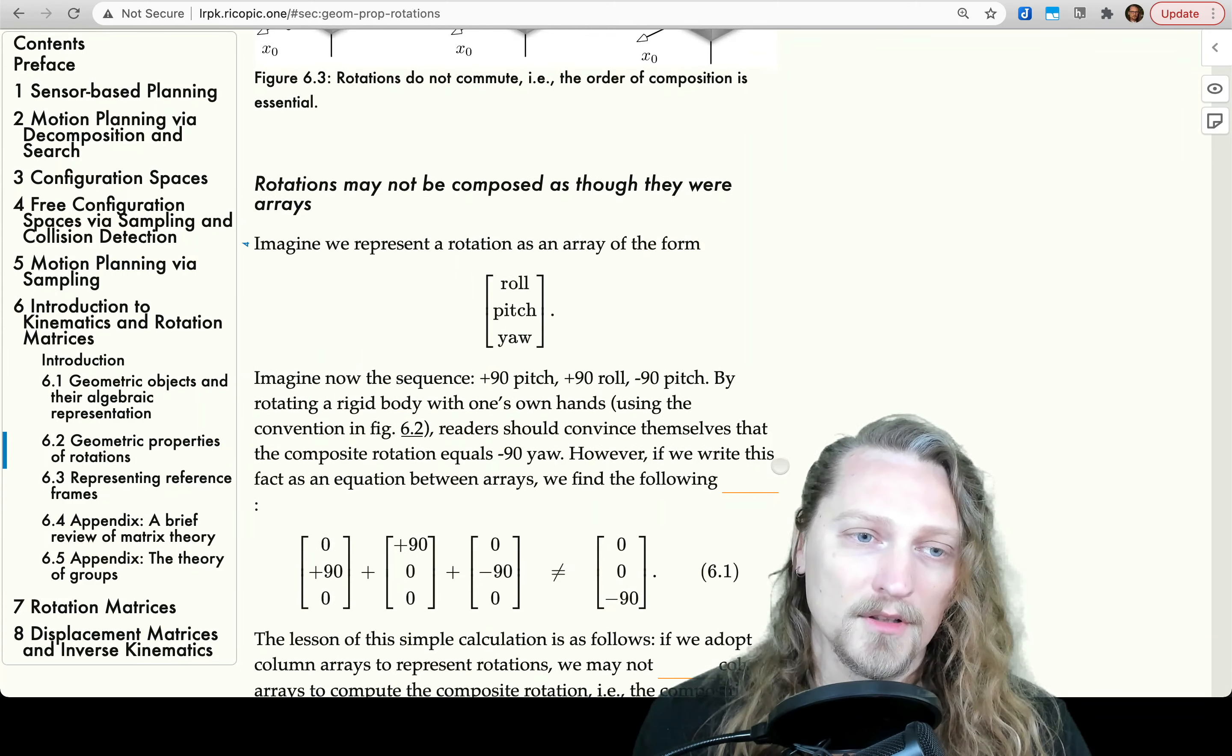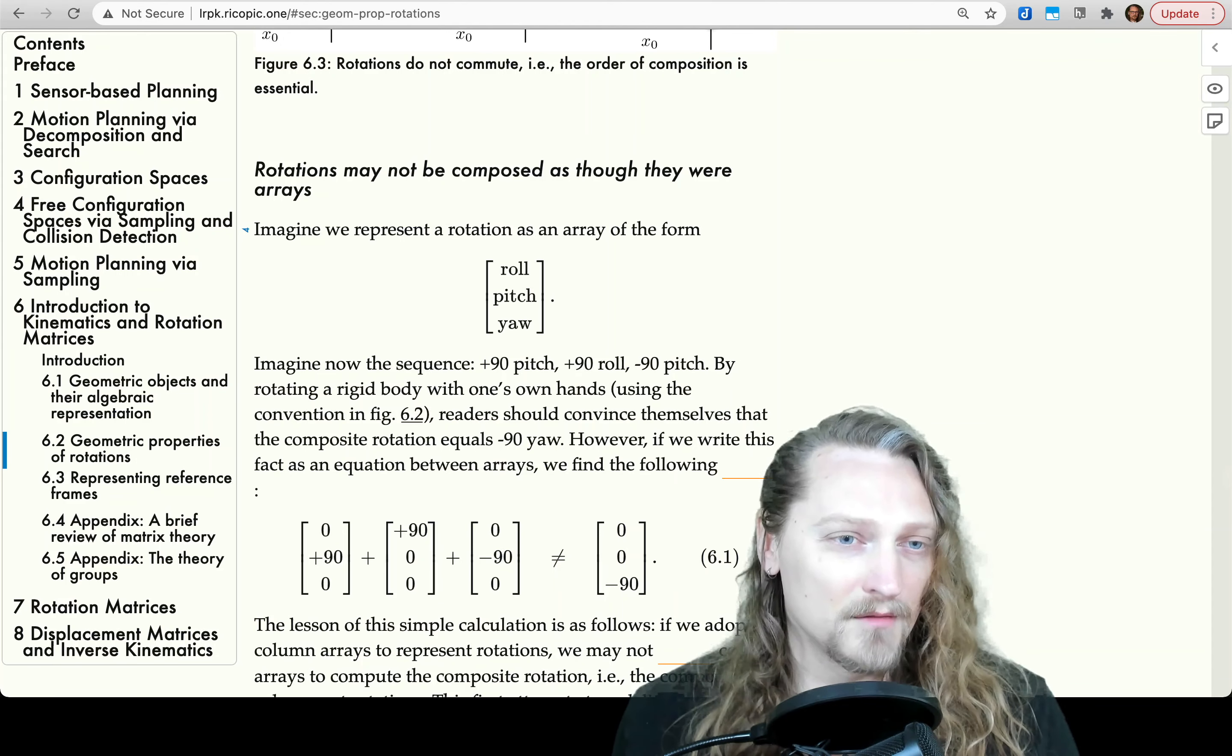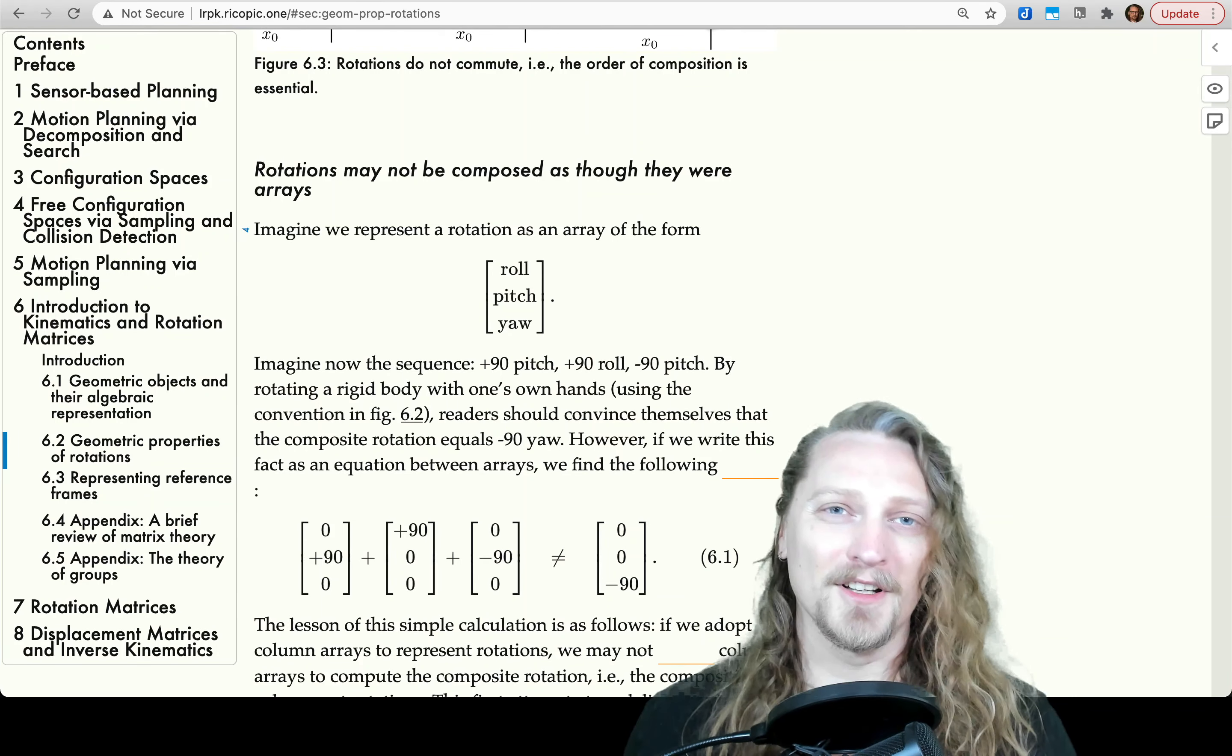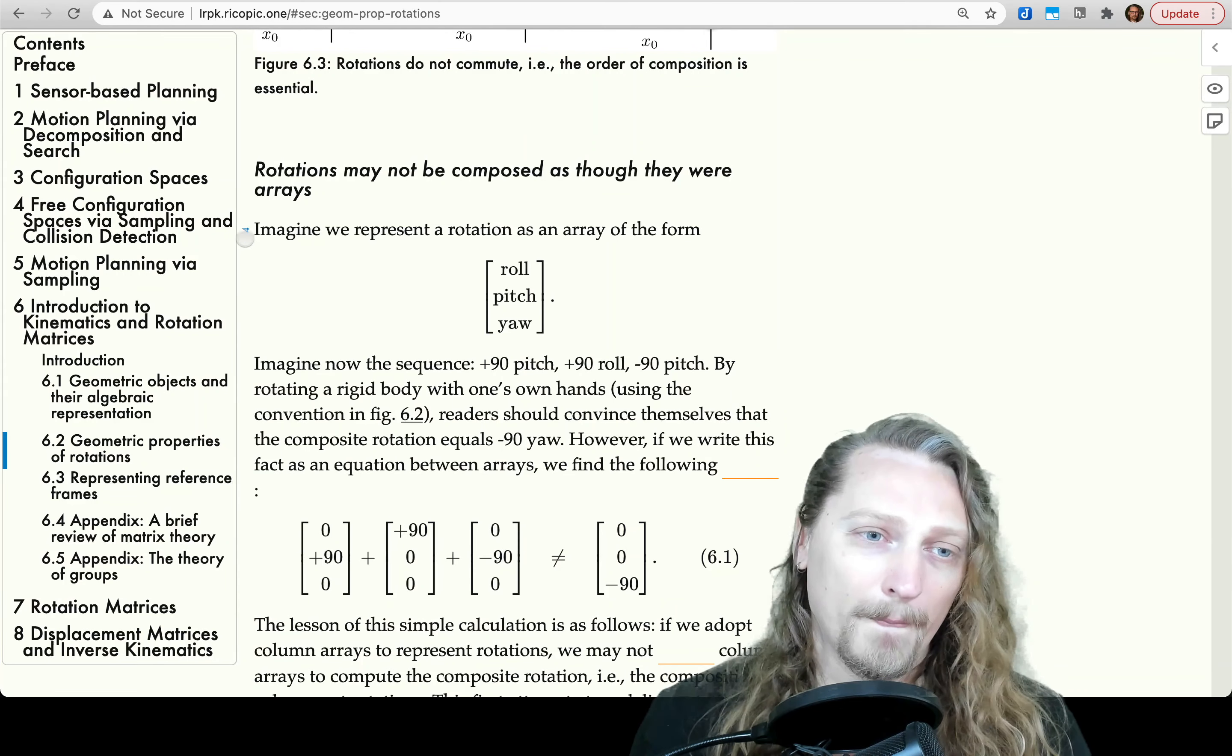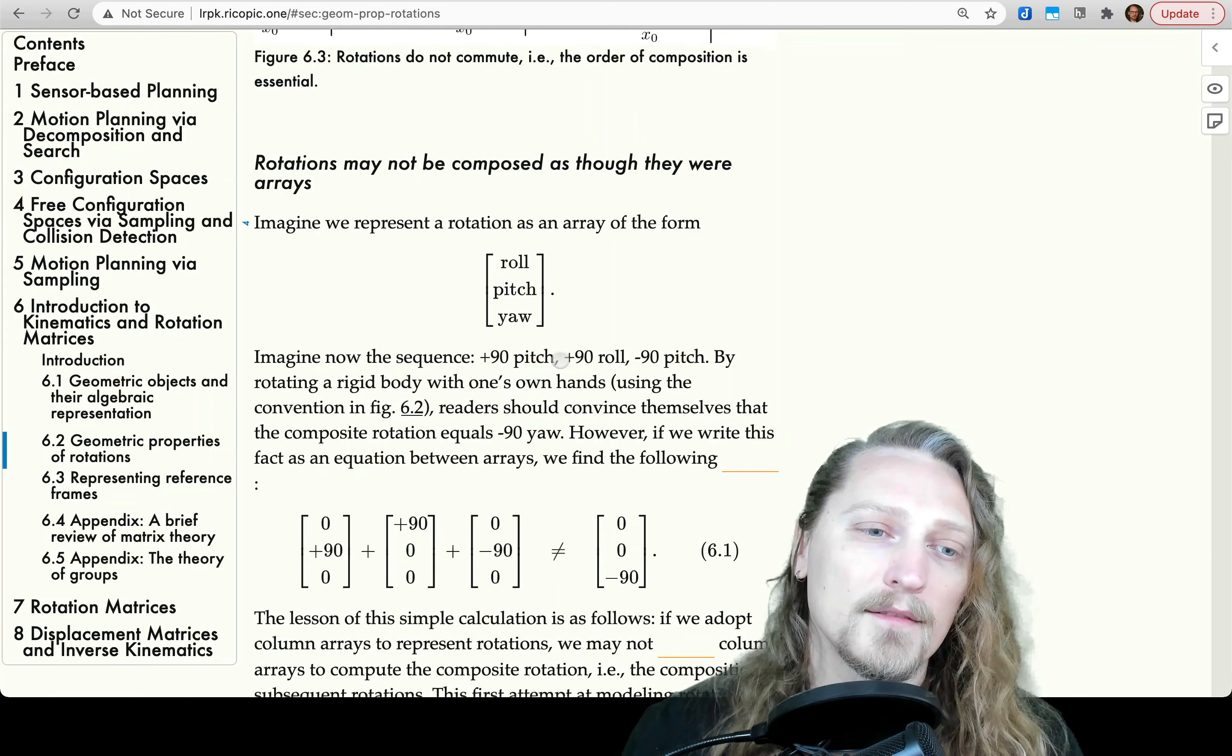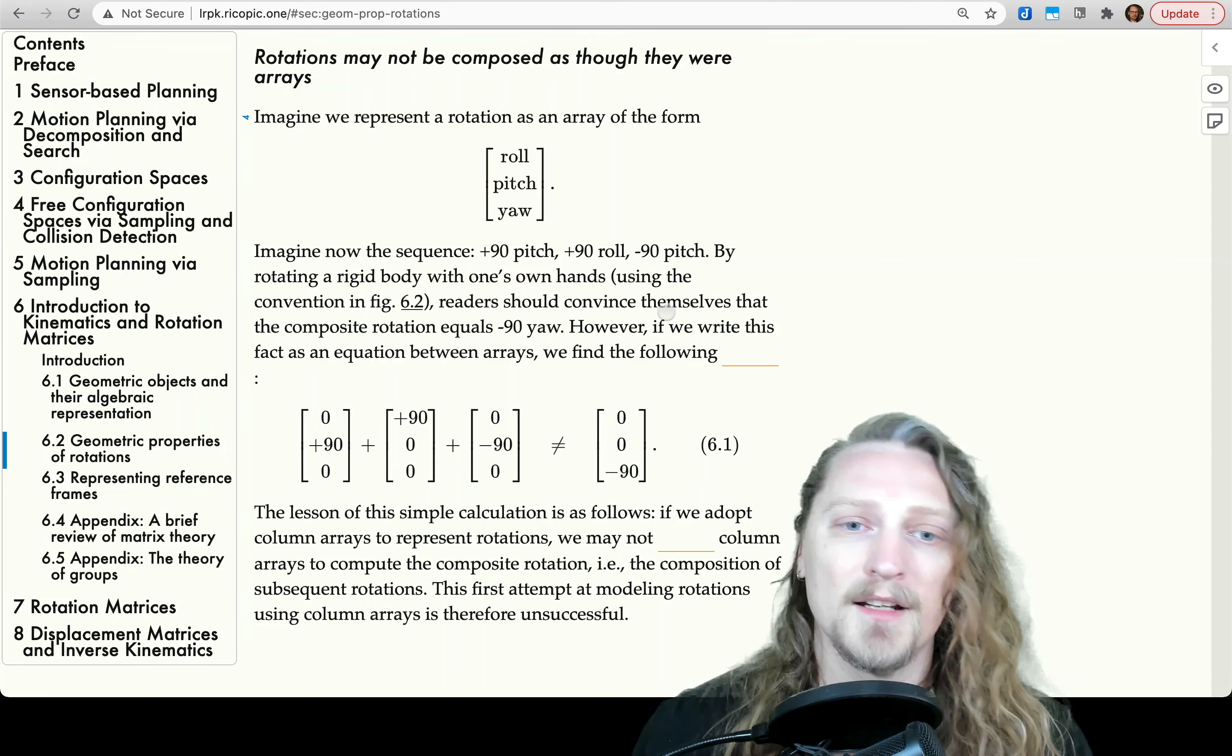Let's take a look at the next section. Rotations may not be composed as though they were arrays. In addition is what we might specify here. If we were to compose them as additive arrays, we would get the wrong result. So, this is our first attempt is to say, oh, let's compose these through addition. But, we'll see that that doesn't work. Imagine we represent a rotation as an array of the form roll, pitch, yaw. Imagine, now, the sequence, plus 90 degree pitch, plus 90 degree roll, minus 90 degree pitch.